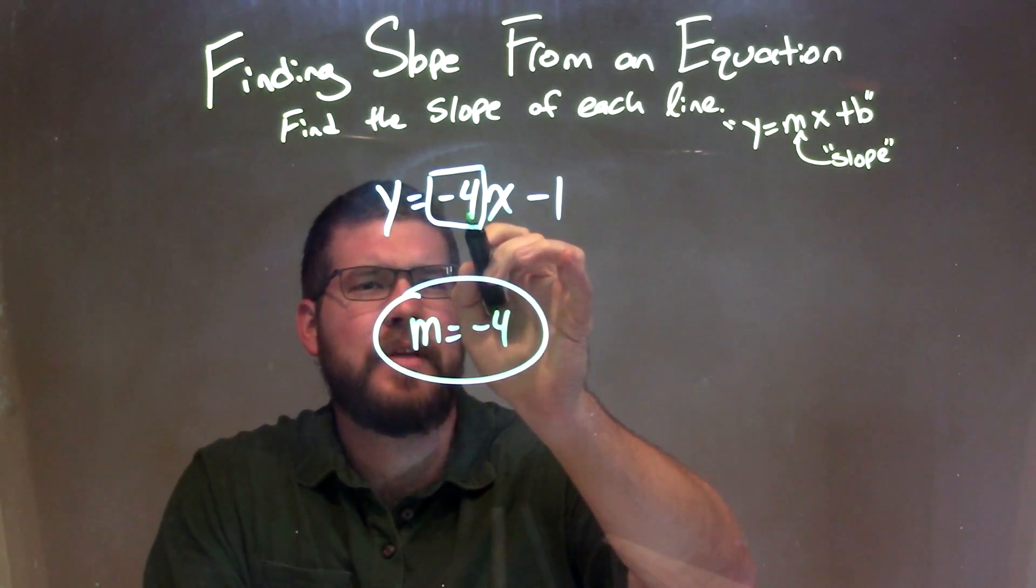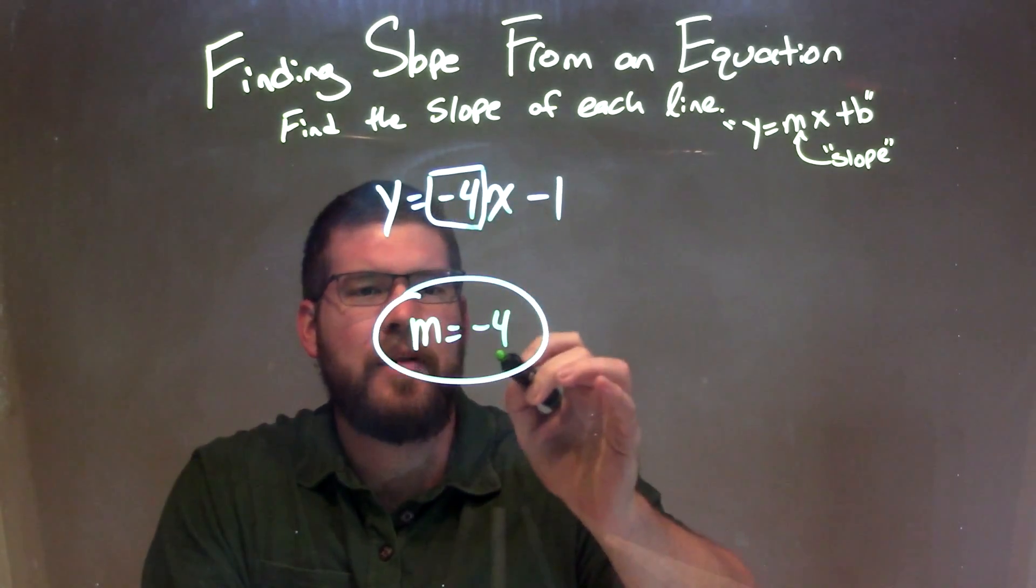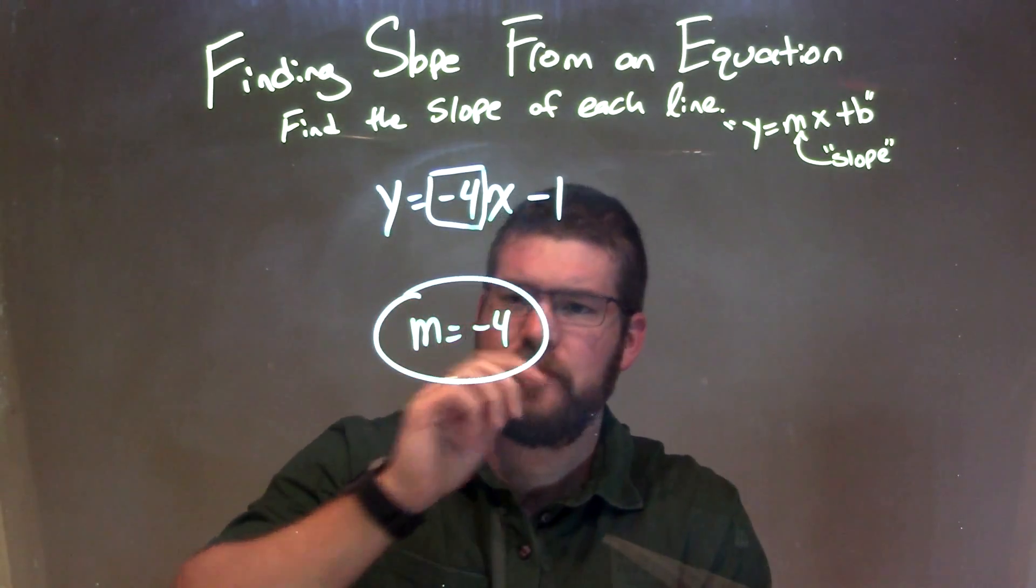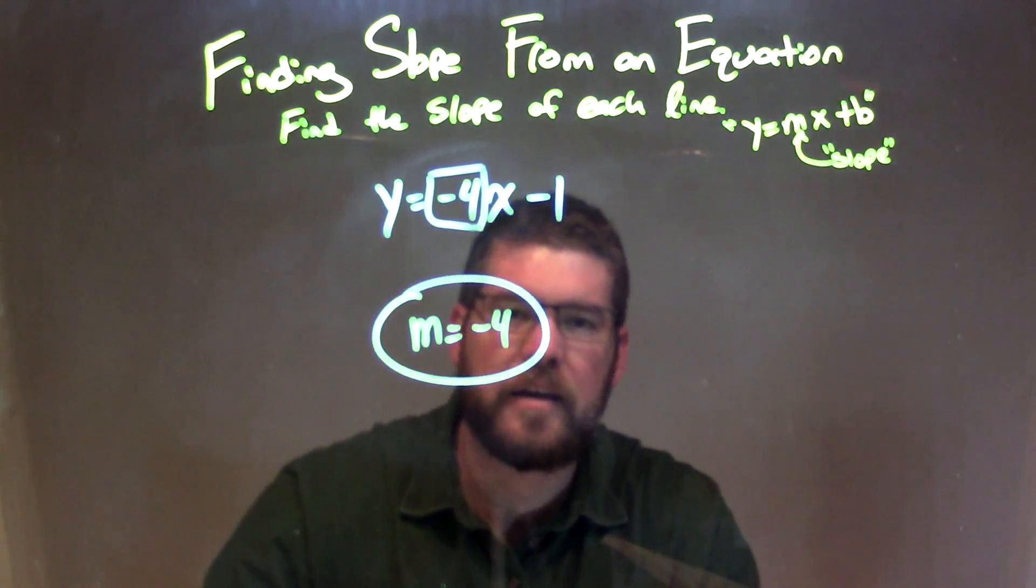So y equals negative 4x minus 1, negative 4 being my m value. So we isolated that, wrote it down here, and then we have our final answer, our final slope answer of m equals negative 4.